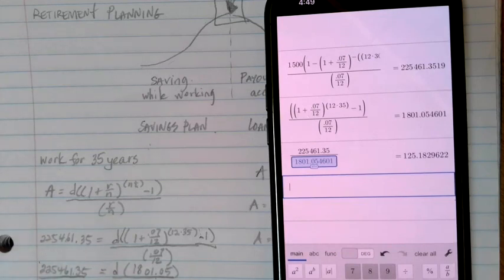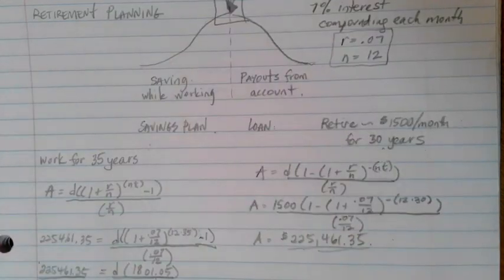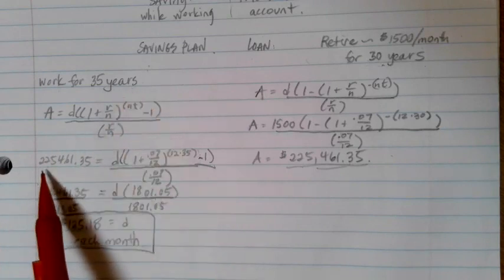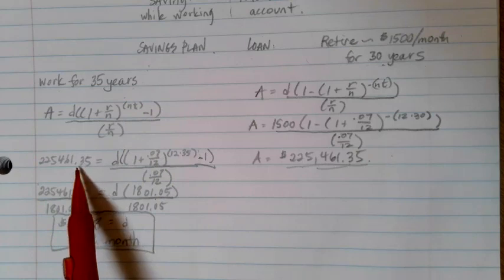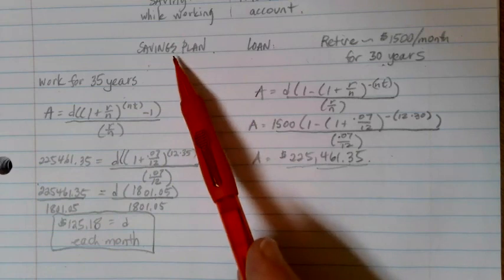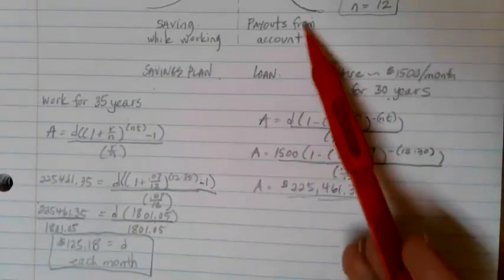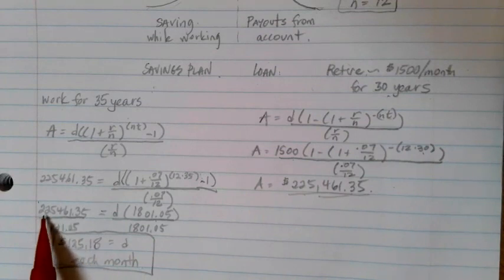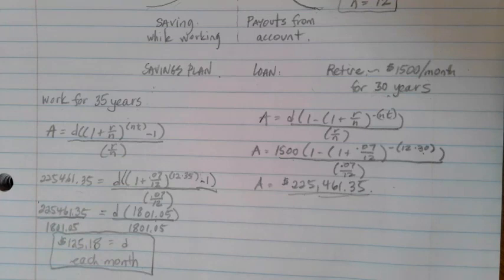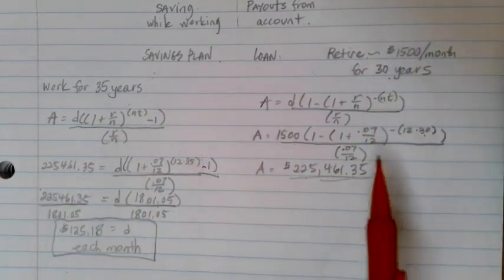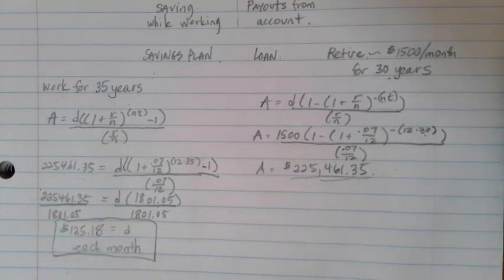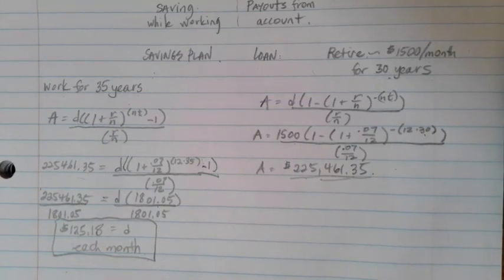And this is really that huge, powerful power of money over time. If I save $125.18 each month for 35 years, at the end of that period of time, I'm going to have $225,461.35. Once I stop working and stop contributing to my savings plan, I am basically going to take a loan out for myself to pay out my account. And if I want $1,500 for 30 years, that's where that $225,461.35 came from. So this is how much I need. This is how much I will have to save in order to get there, which is pretty cool. You're taking $1,500 a month out, but you're only putting $125 a month in. And that's the power of that accumulated interest over time. We love exponential functions when we're saving money.